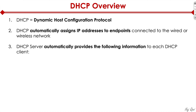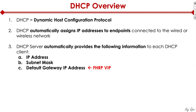The DHCP server automatically provides the following information to each DHCP client, whether it's a laptop, a desktop, wired, wireless, or an IP phone. Each device gets an IP address, a subnet mask, and a default gateway IP address — which we just finished talking about. Typically, that's our first hop redundancy protocol virtual IP.